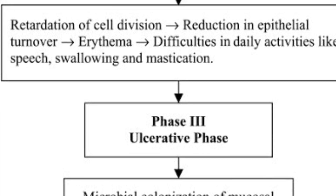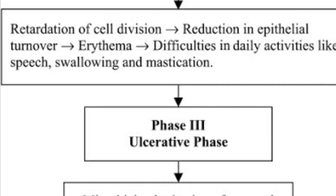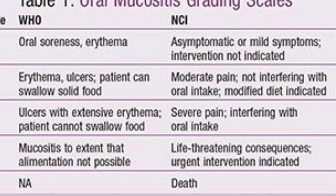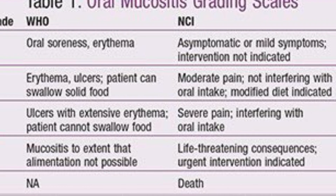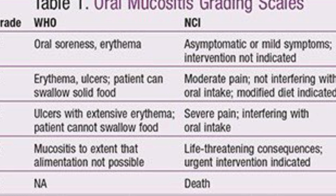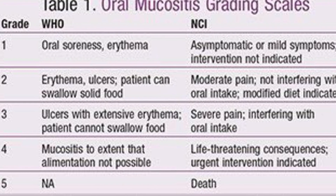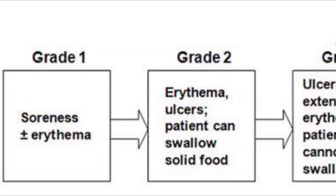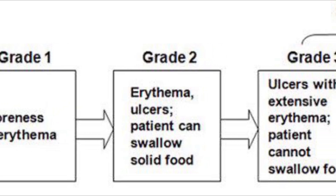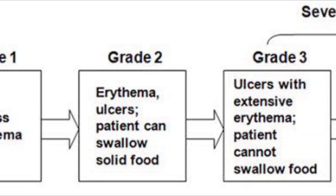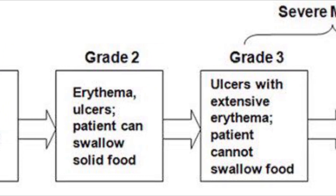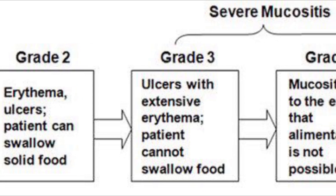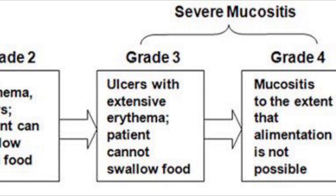The staging of mucositis according to the WHO has four grades: Grade 0 — no oral mucositis; Grade 1 — erythema and soreness; Grade 2 — ulcers, able to eat solids; Grade 3 — ulcers requiring liquid diet; Grade 4 — ulcers making it impossible to eat. The National Cancer Institute uses five grades, where the fifth grade is death.